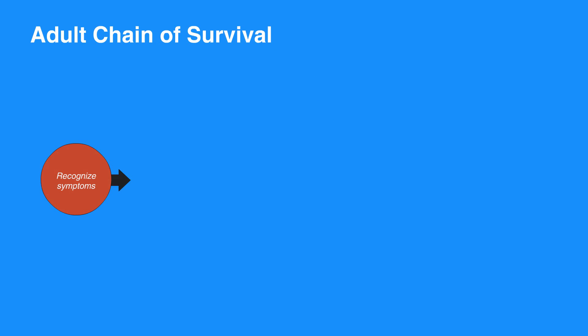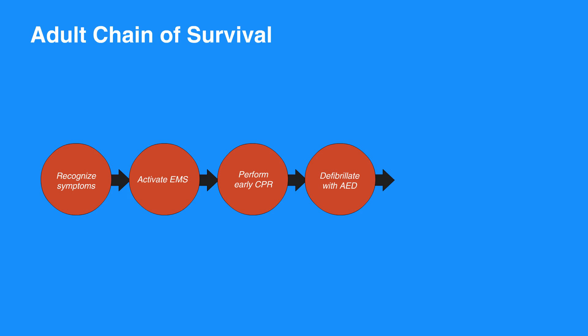The first step in the adult chain of survival is to recognize symptoms and activate EMS. Next, perform early CPR. Then, defibrillate with AED. Once the EMS team arrives, they'll provide advanced life support to the individual. When the individual becomes stable and is taken to the hospital, they'll receive post-cardiac arrest care.